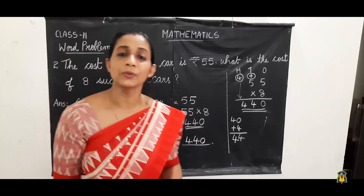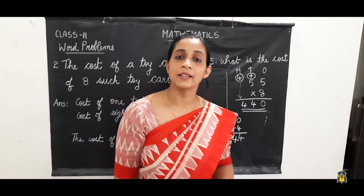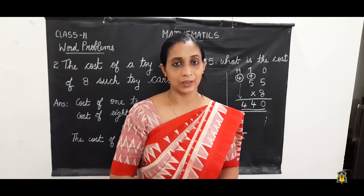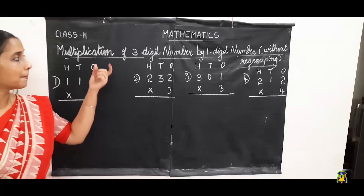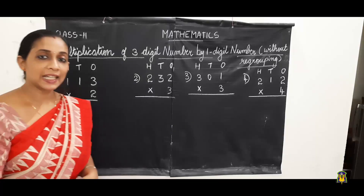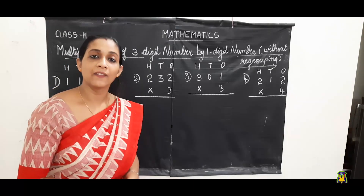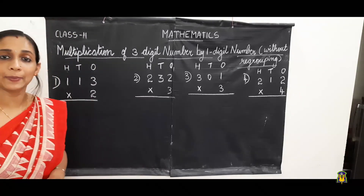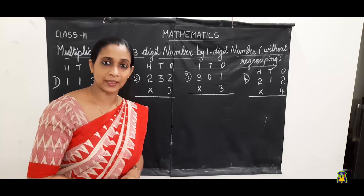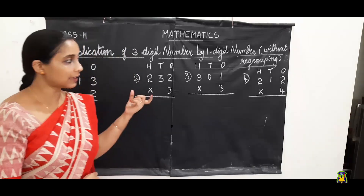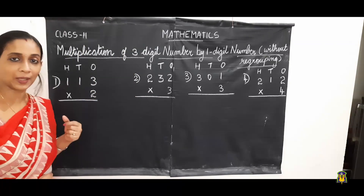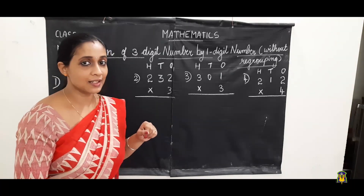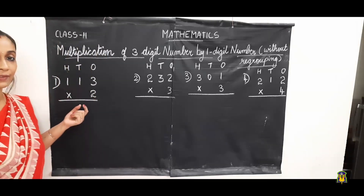Now let us do the multiplication of three digit number by one digit number without regrouping. We have already learned multiplication of two digit number by one digit number. In three digit number there is no change — we have to add one more place, that is hundreds place. It is also very simple only if you know the tables. So let us see the first question.